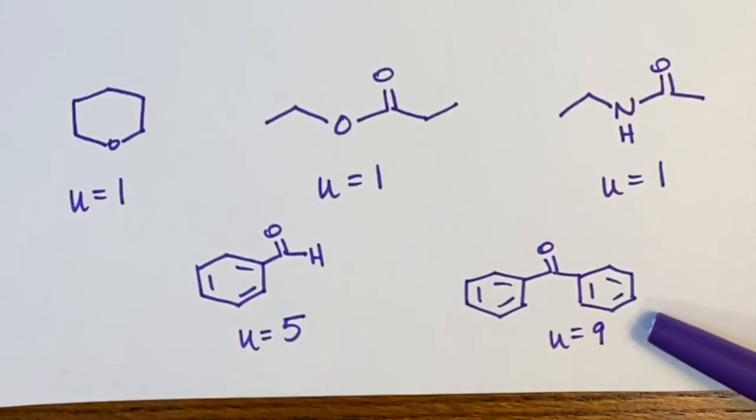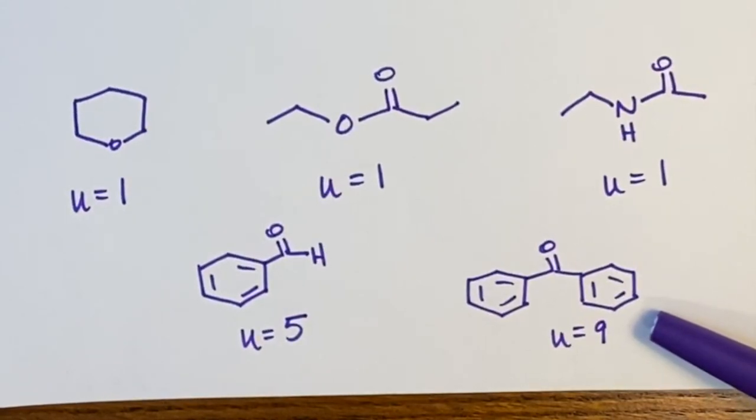A structure with 2 benzene rings and 1 carbonyl has a total of 9 units of unsaturation.